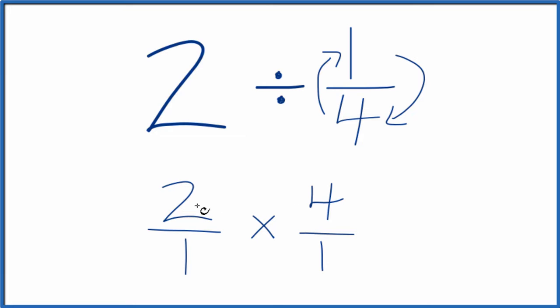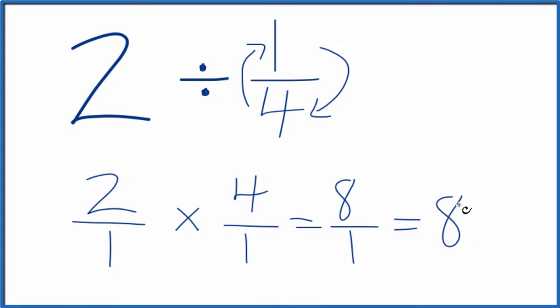So now we can just multiply. Two times four, that equals eight. And one times one, that equals one. We end up with eight over one, which is just eight.